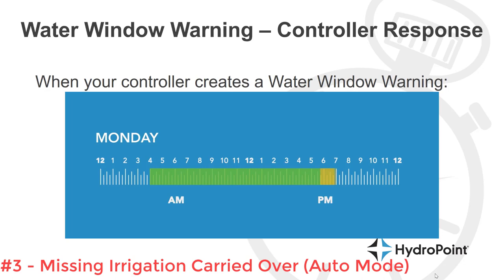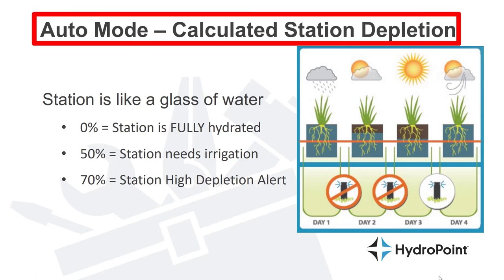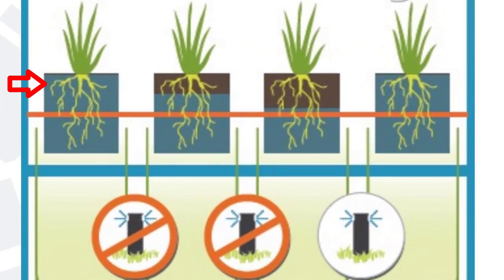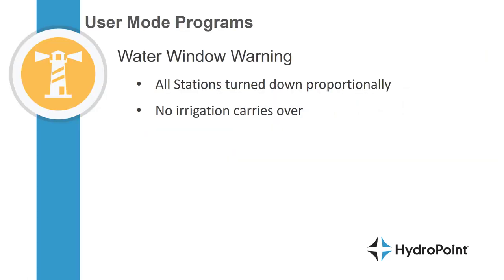If your stations are in auto mode, the controller will remember the irrigation that wasn't applied and make that irrigation up in the next available watering window. If your stations are programmed in auto mode, we're calculating station depletion and typically irrigating to zero percent depletion — where that glass of water is fully hydrated. But if a water window warning is turning down your irrigation, we know we don't irrigate that station back to zero percent, and we carry over the 10 or 15 percent depletion that the controller wasn't able to water out that night. The next day, instead of starting at zero percent depletion, it starts at 10 or 15 percent less, and we're always calculating exactly how thirsty that plant is and exactly how much irrigation we need to keep it healthy.